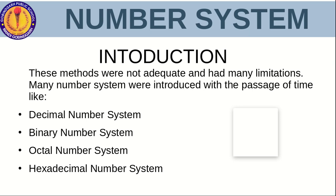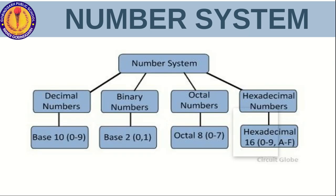That's why a new number system was invented. These new number systems which were invented — at that time they were new; now you are using them, so for you they are not new. But according to ancient times these are new. Many number systems were introduced with the passage of time: the decimal number system, binary number system, octal number system, and hexadecimal number system. These four number systems we will discuss in detail.